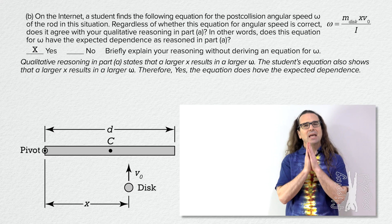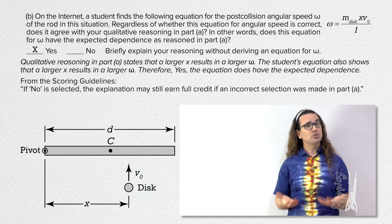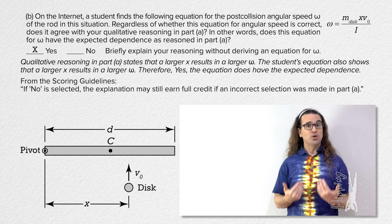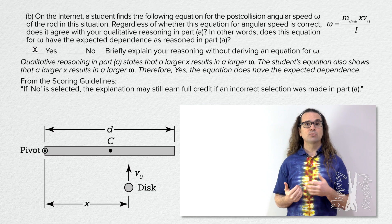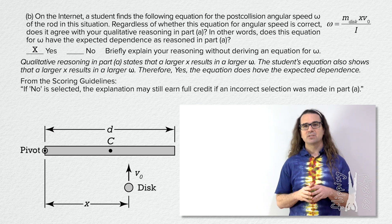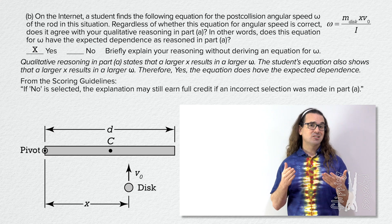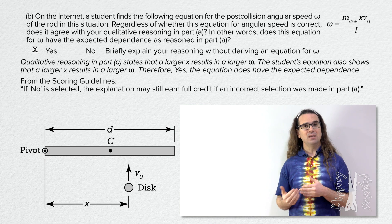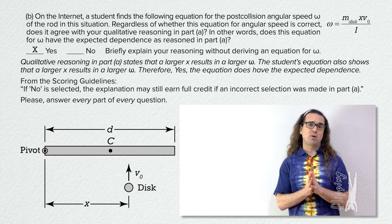A quick note about grading. This is from the scoring guidelines: if no is selected, the explanation may still earn full credit if an incorrect selection was made in part A. In other words, if you get part A wrong, you can still get full credit for part B. Please answer every part of every question.